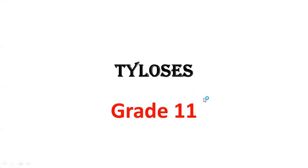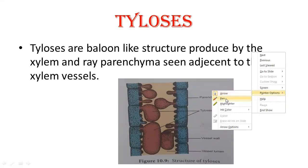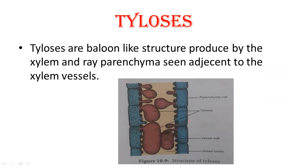Today's video topic is tyloses, grade 11. Tyloses are the balloon-like structures which are produced by xylem parenchyma cells into adjacent xylem vessels. These are the xylem parenchyma cells, this is the vessel lumen, and these balloon-like structures are the tyloses. Tyloses are the outgrowth of xylem parenchyma cells.